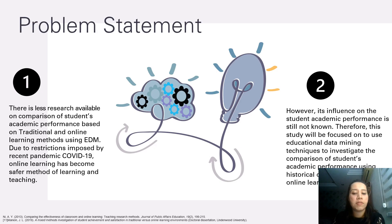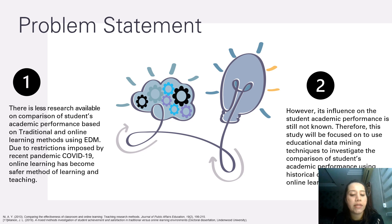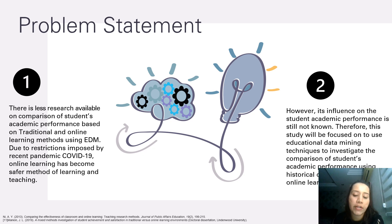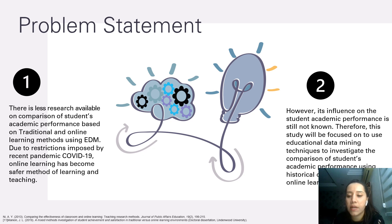Moving on to the problem statement formulated from the literature review. Since there is less research available on comparison of students' academic performance based on traditional, blended, and online learning methods using EDM, and due to restrictions imposed by the recent COVID-19 pandemic, online and blended learning have become the safer choice for learning and teaching. However, the influence on students' academic performance is still not fully known. Therefore, this study focuses on using educational data mining techniques to investigate the comparison of students' academic performance using historical data of traditional and online learning methods.